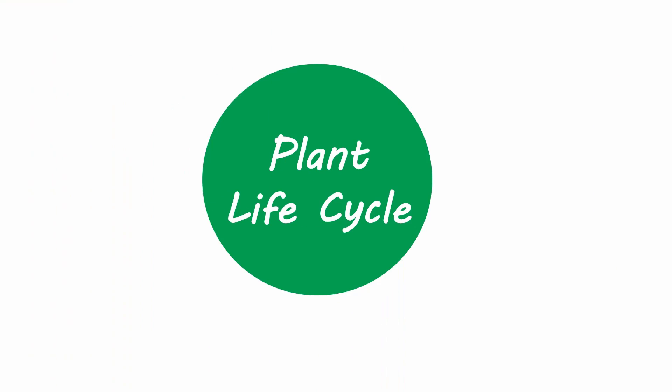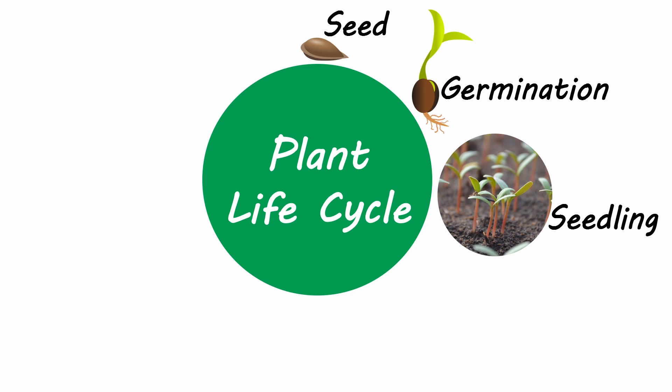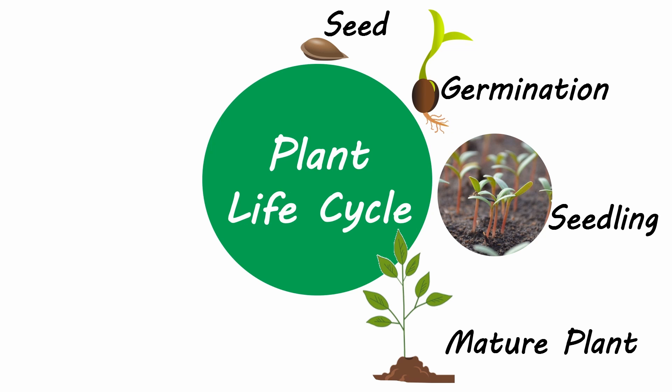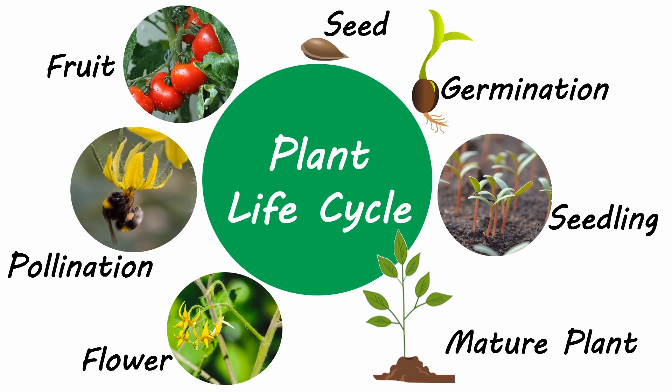The plant life cycle has seven main stages: seeds, germination, seedling, mature plant, flower, pollination, and fruit.